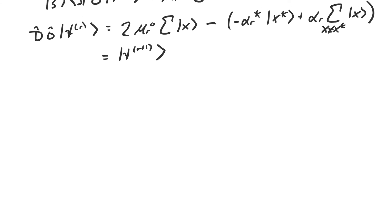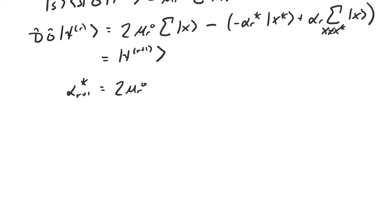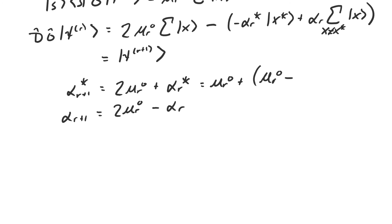Let's look at what happened to the amplitudes after applying the subroutine. The new coefficient in front of x-star, α_{r+1}*, equals two times μ_r plus α_r* (the old coefficient). The coefficient in front of all other basis vectors, α_{r+1}, equals two times μ_r minus α_r. We can rewrite these as μ_r plus (μ_r minus negative α_r*) and μ_r minus (α_r minus μ_r), which makes it easier to understand what the subroutine has actually done.